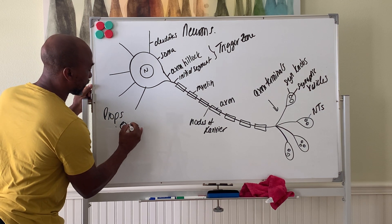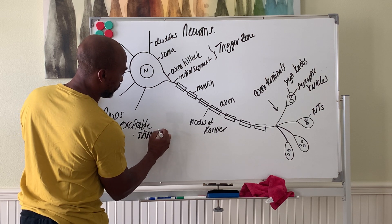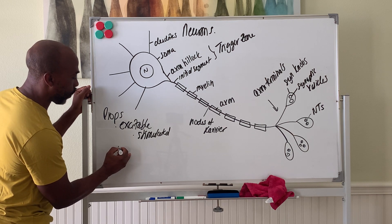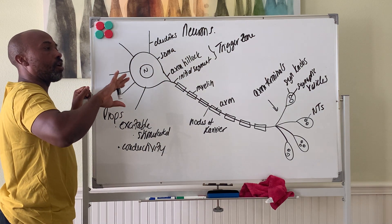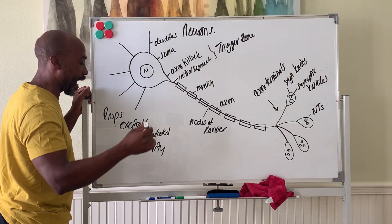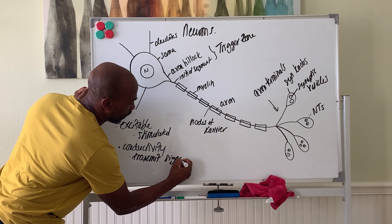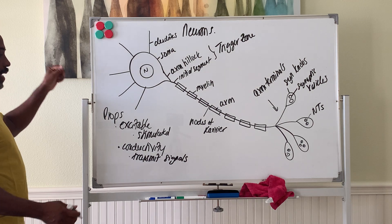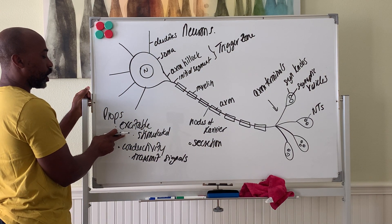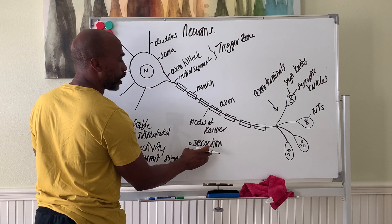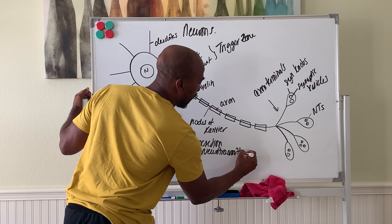Neurons have some properties. All neurons are excitable, meaning they can be stimulated to respond — they can be stimulated or activated. And once they're stimulated, they will conduct; that's called conductivity. They will propagate whatever they create along the axon. And they also secrete things. Once the signal generated here conducts down the axon, at the end of the axon it will trigger the release of chemicals — these are secretions of your neurotransmitters at the end of the process.